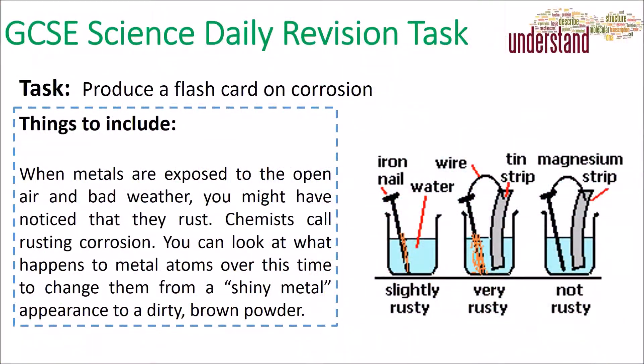Hello and welcome to today's daily science revision task, which is to produce a flash card on corrosion. The main thing that you need to include is that when metals are exposed to the open air in bad weather, they undergo a process of oxidation called rusting. Chemists call rusting corrosion.